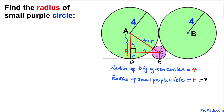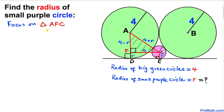We know that line segment AD is the radius, which is 4 units, and FD is lowercase r. Therefore, the length of AF is going to be 4 minus r.